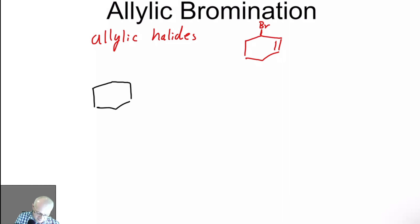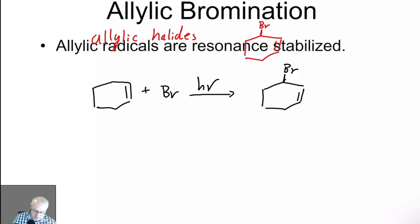Starting with cyclohexene plus bromine, the presence of UV light, will give you bromination at the allylic position. And a pretty good yield, 80% or so yield. So that's really, really good. So that's the reaction. Let's see the mechanism.